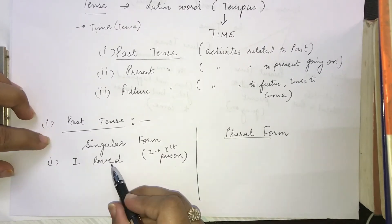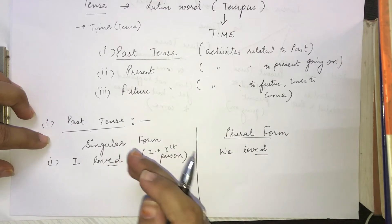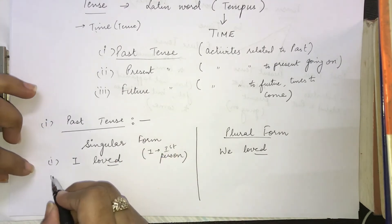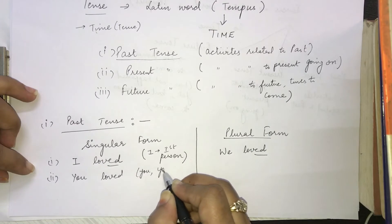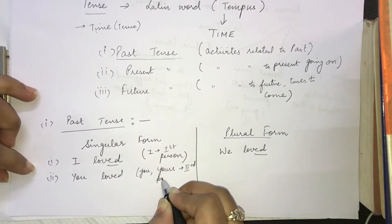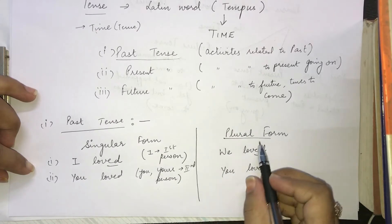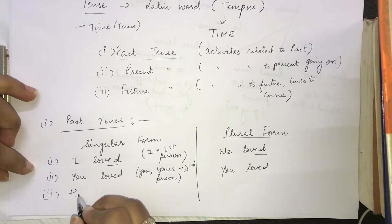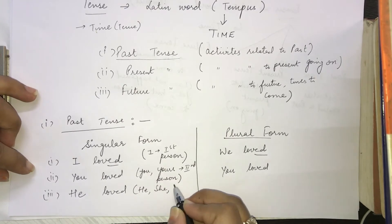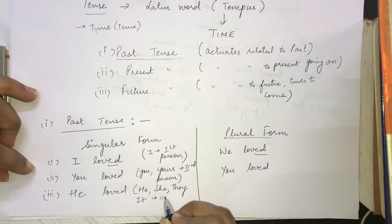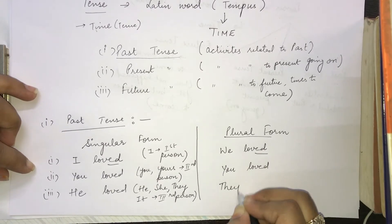The plural form of this example will be: we loved. 'Loved' is something that is past — it means you have already loved. The second form is: you loved. 'You' and 'yours' are second person. In the plural form, 'you' remains 'you loved.' The third type is: he loved. Here we have examples like he, she, they, and it — all in the third person form. The example in plural form will be: they loved.